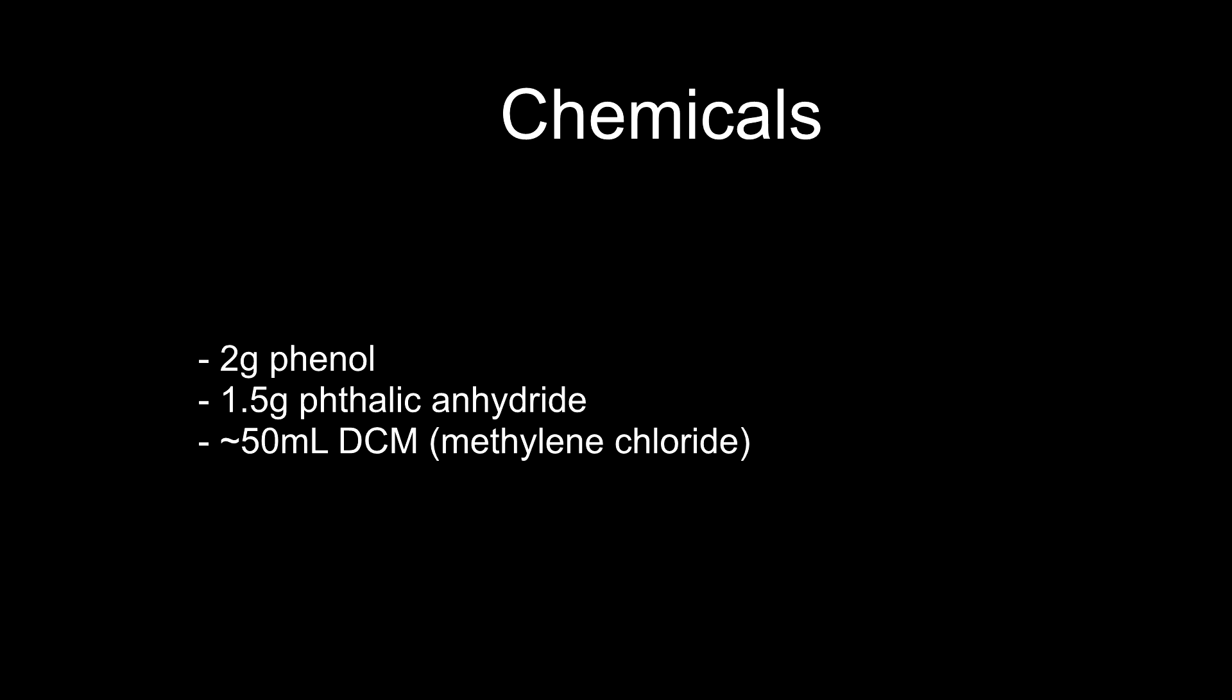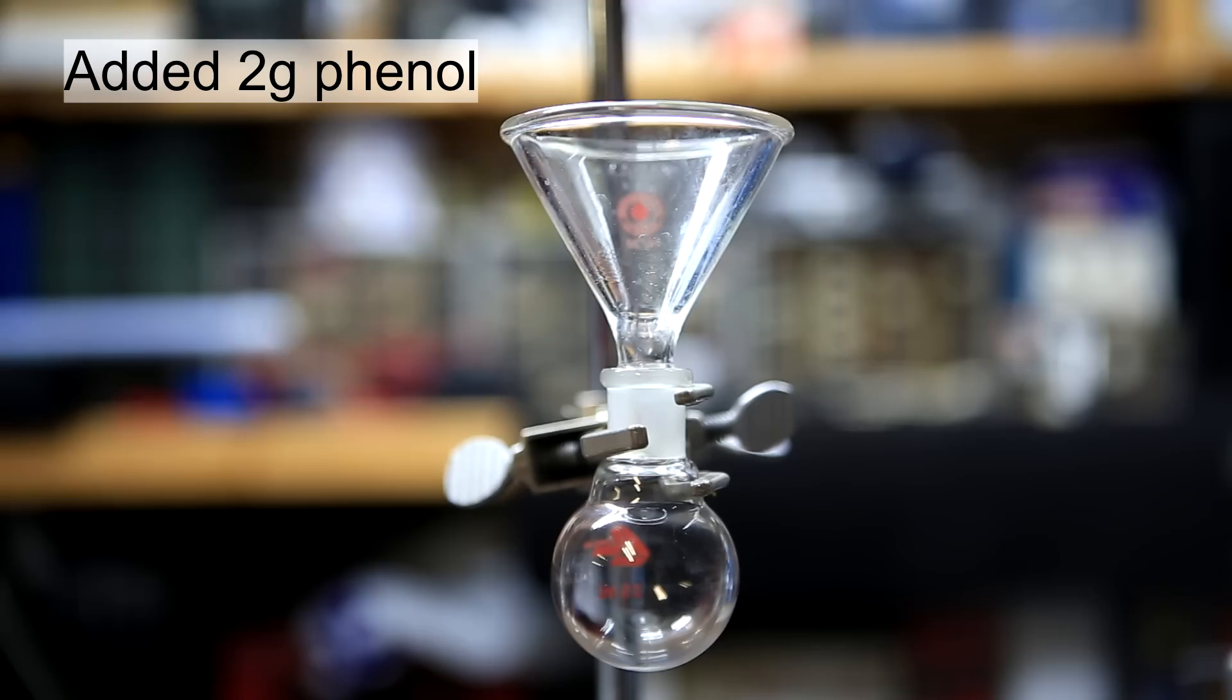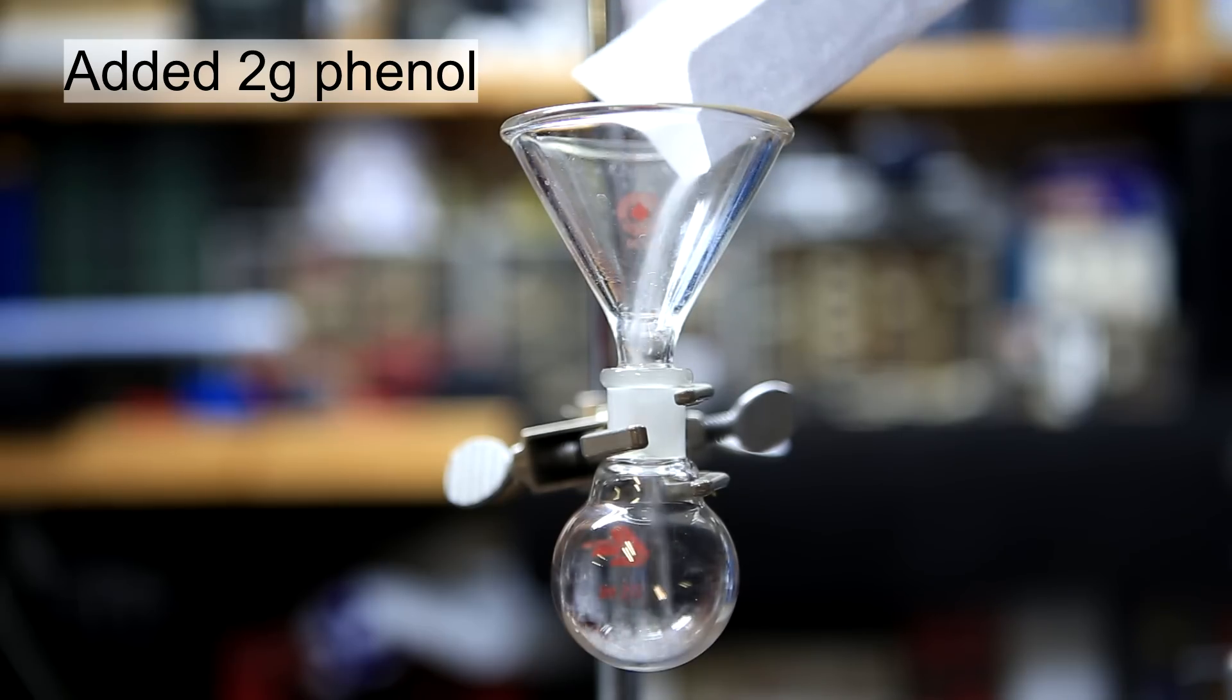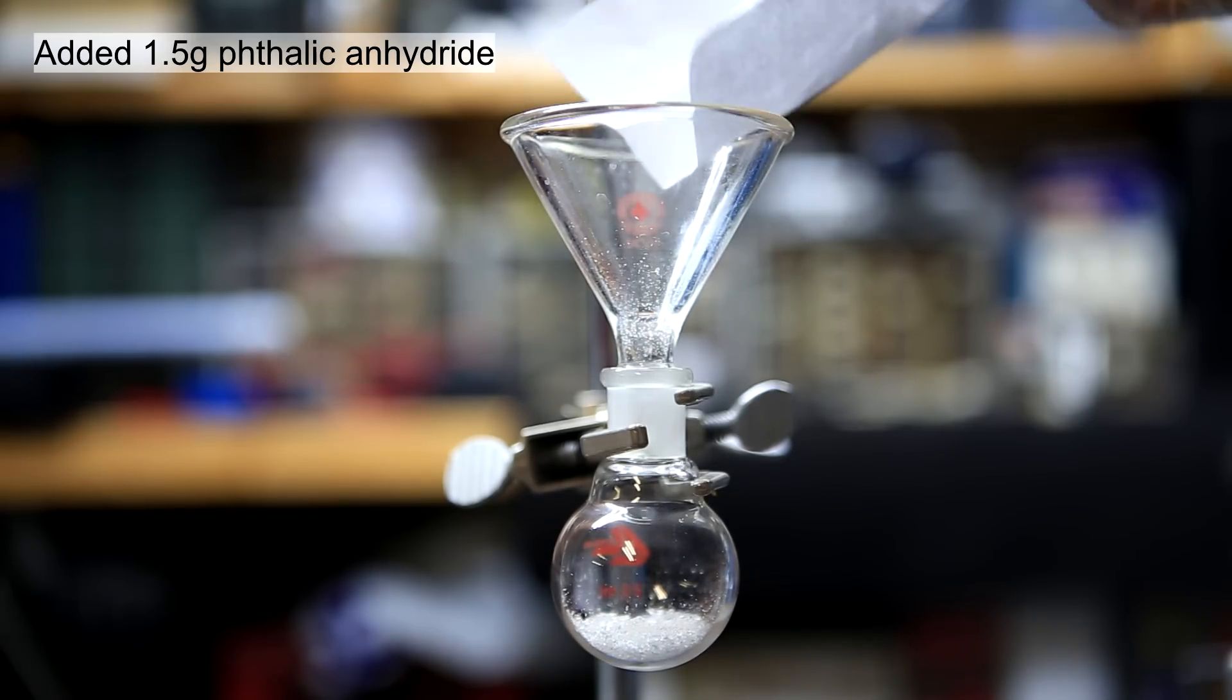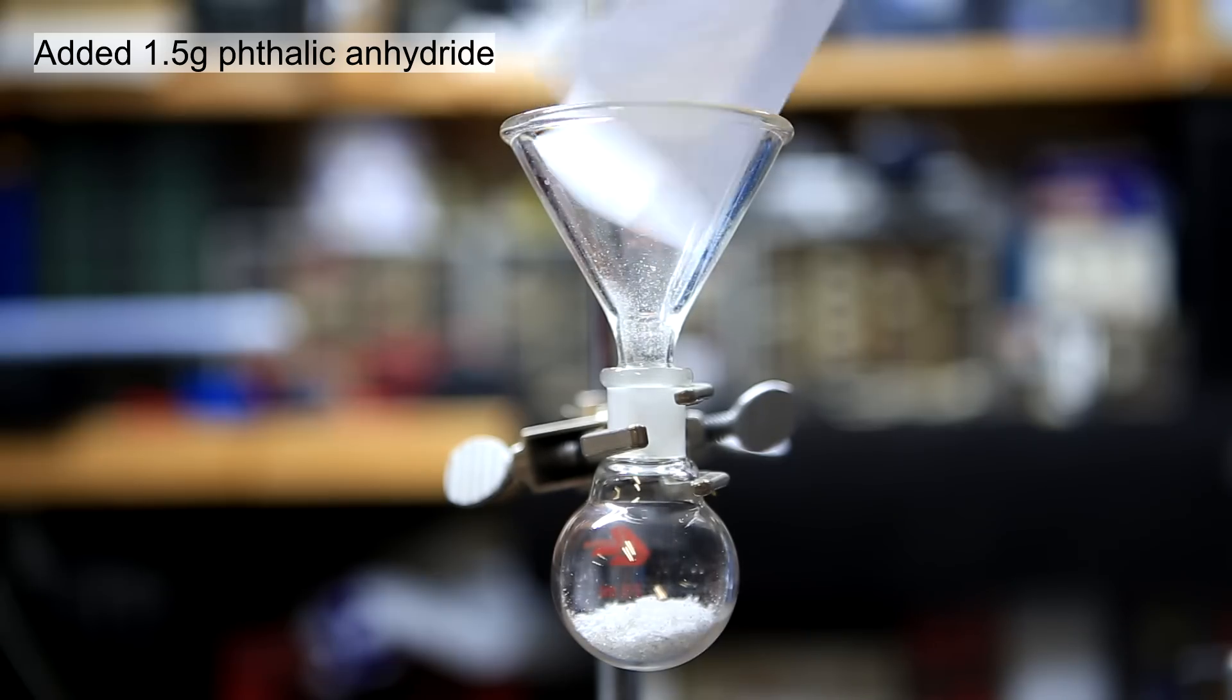As a side note, in previous videos I've shown how all three of these chemicals can be obtained from household products. 2 grams of phenol was added to a 25 ml round bottom flask. This was followed by the addition of 1.5 grams of phthalic anhydride.